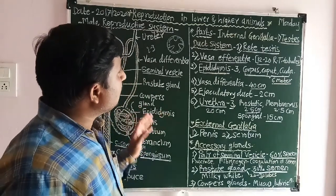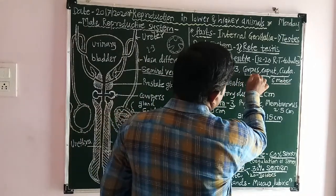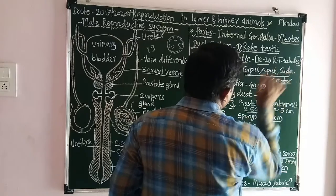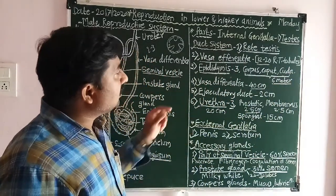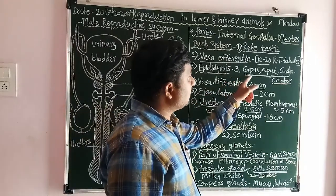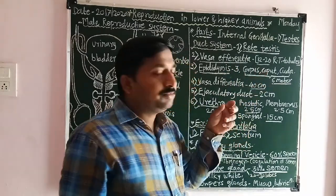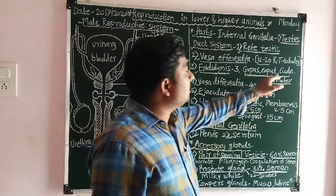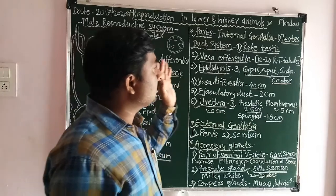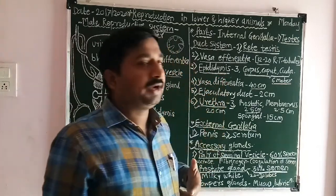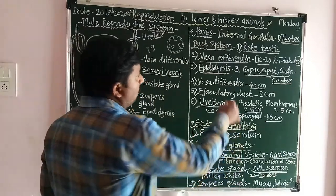Each epididymis is divided into three parts: the caput epididymis (head), the corpus epididymis (middle part), and the cauda epididymis (tail). These are our total three parts.